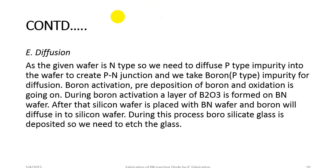The next process is diffusion. Since the given wafer is N-type, we need to diffuse P-type impurities into the wafer to create the PN junction. Boron is used as the P-type impurity. During Boron activation, a layer of B₂O₃ is formed on a BN wafer. The silicon wafer is then placed with the BN wafer so Boron diffuses into the silicon. During this process, borosilicate glass is deposited and needs to be etched away.